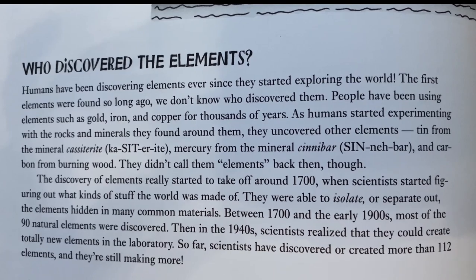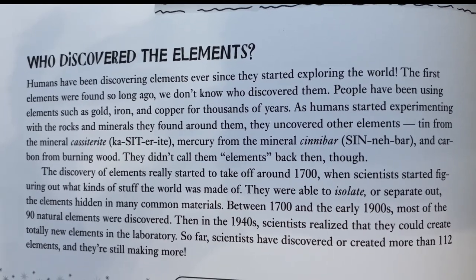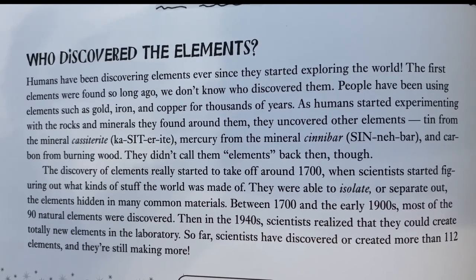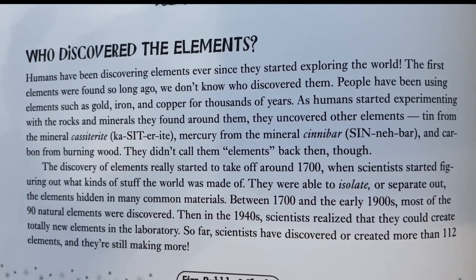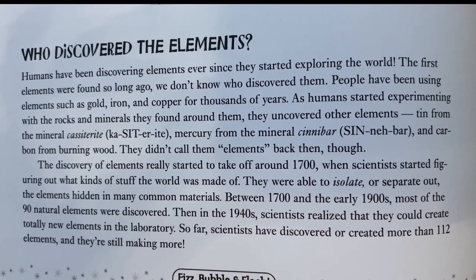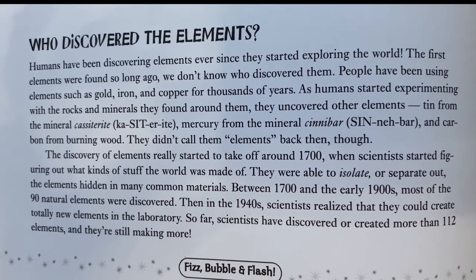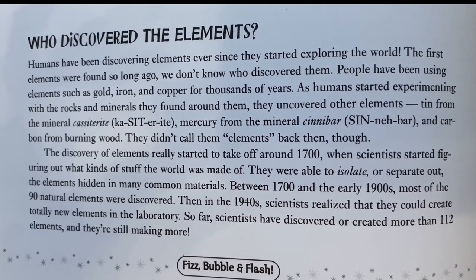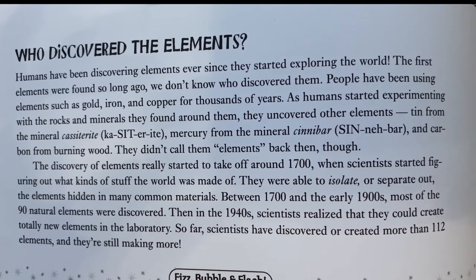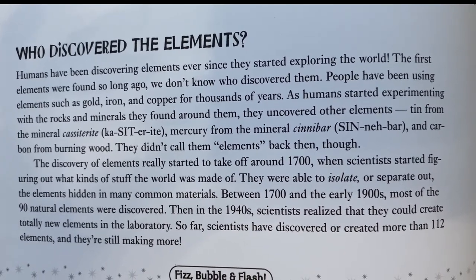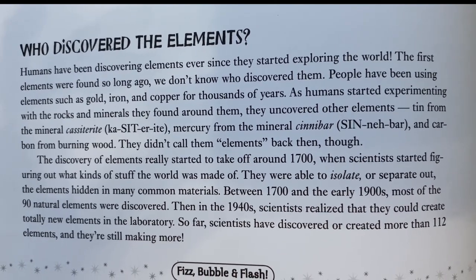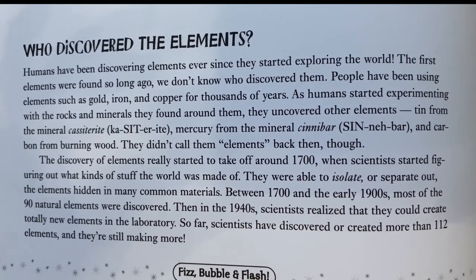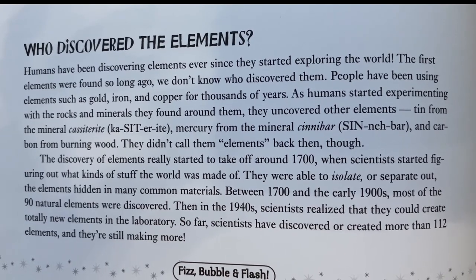Humans have been discovering elements ever since they started exploring the world. The first elements were found so long ago we don't know who discovered them. People have been using elements such as gold, iron, and copper for thousands of years. As humans started experimenting with rocks and minerals, they uncovered other elements — tin from the mineral cassiterite, mercury from the mineral cinnabar, and carbon from burning wood. The discovery of elements really took off around 1700 when scientists started figuring out what the world was made of.